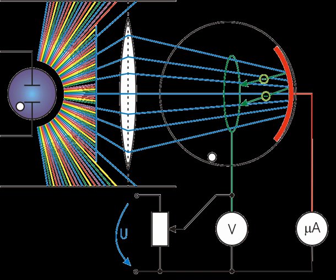The photoelectric effect is the emission of electrons or other free carriers when light hits a material. Electrons emitted in this manner can be called photoelectrons. This phenomenon is commonly studied in electronic physics, as well as in fields of chemistry, such as quantum chemistry and electrochemistry.